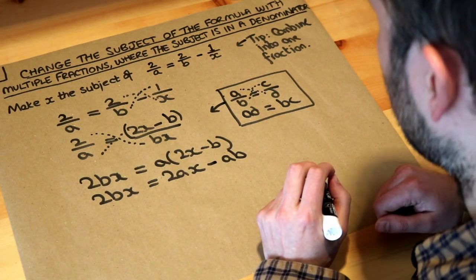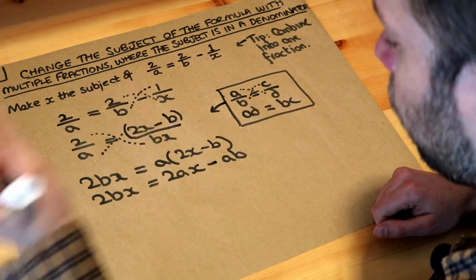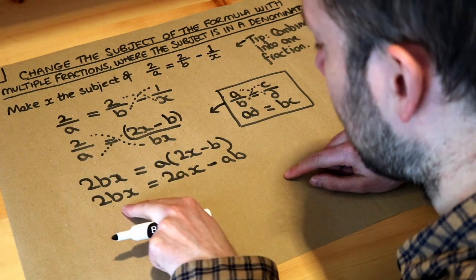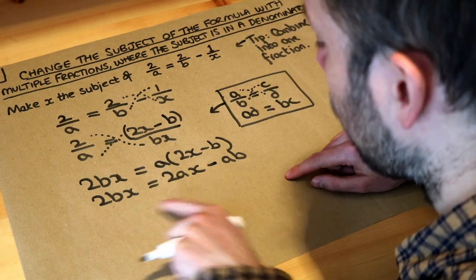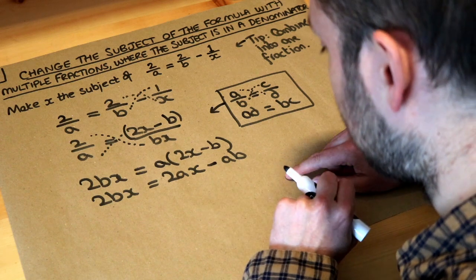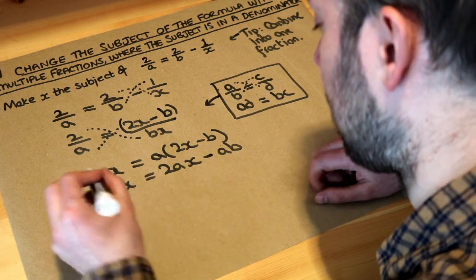Think about our strategy when we're trying to get x to be the subject. We need to isolate all the x terms on one side of the equation. Now we could either move this 2ax over here by subtracting 2ax, or we can move this 2bx over here by subtracting 2bx. So it doesn't matter either way. Let's just say we want to get all the x terms on the left hand side.